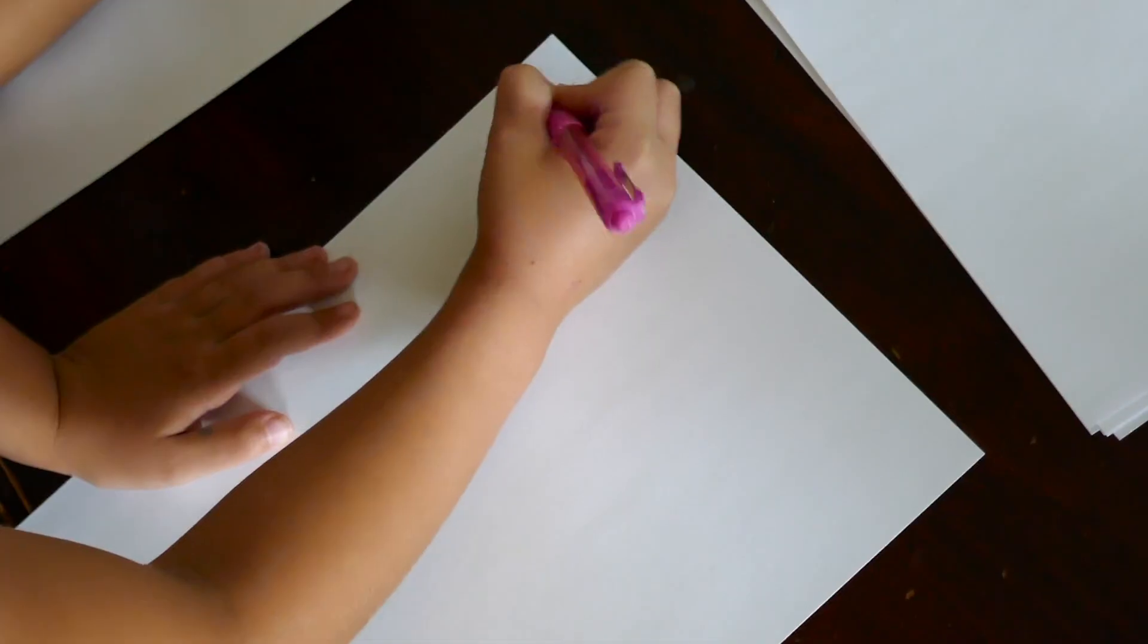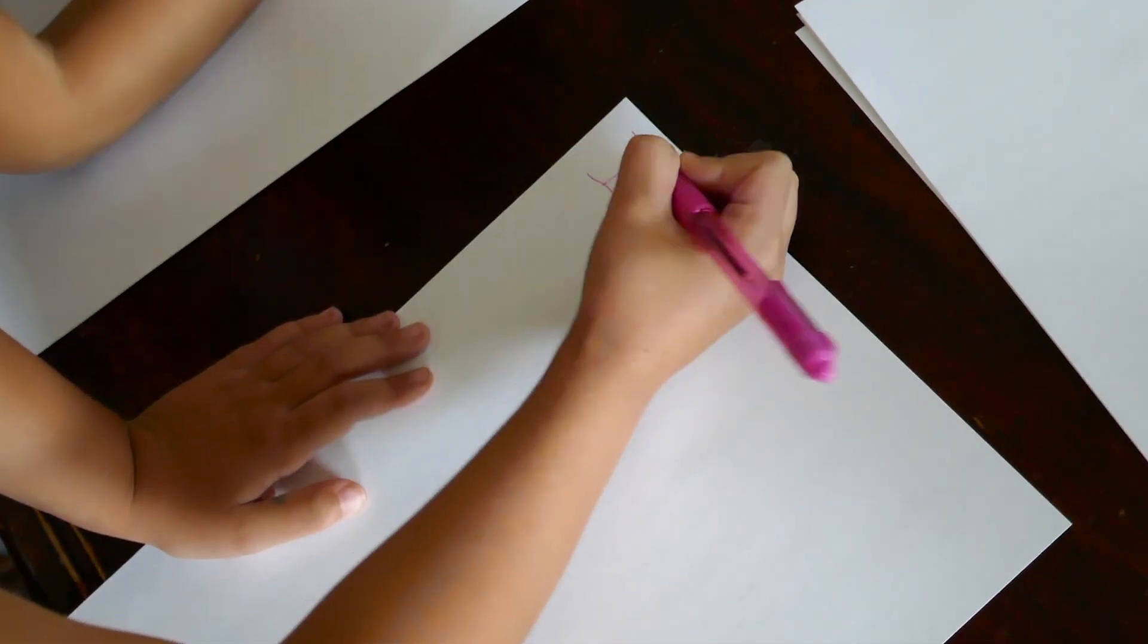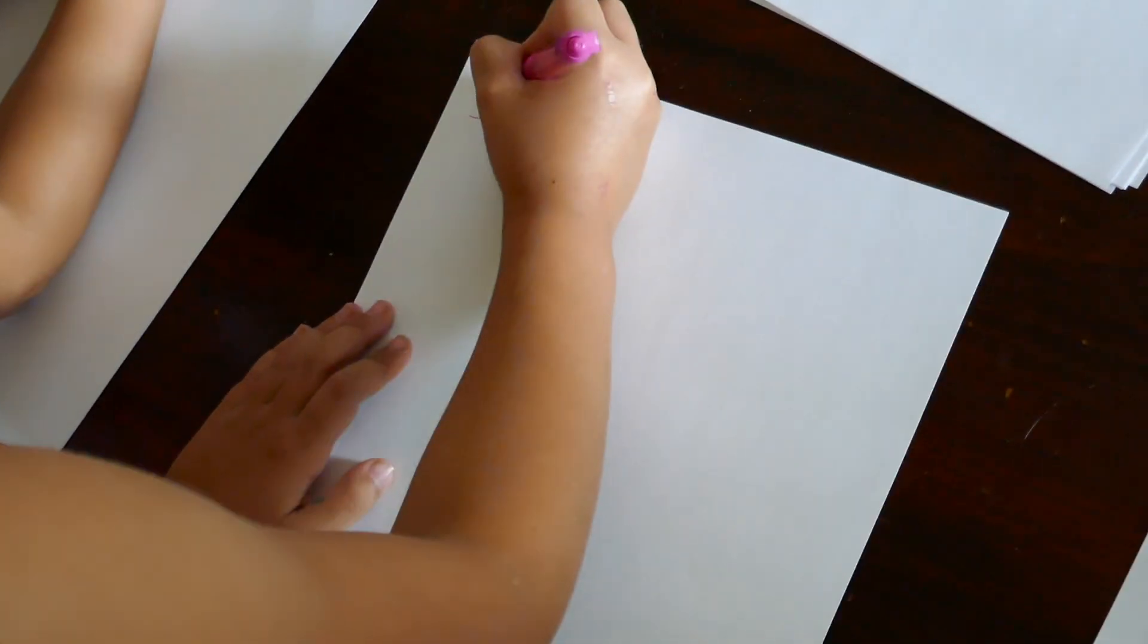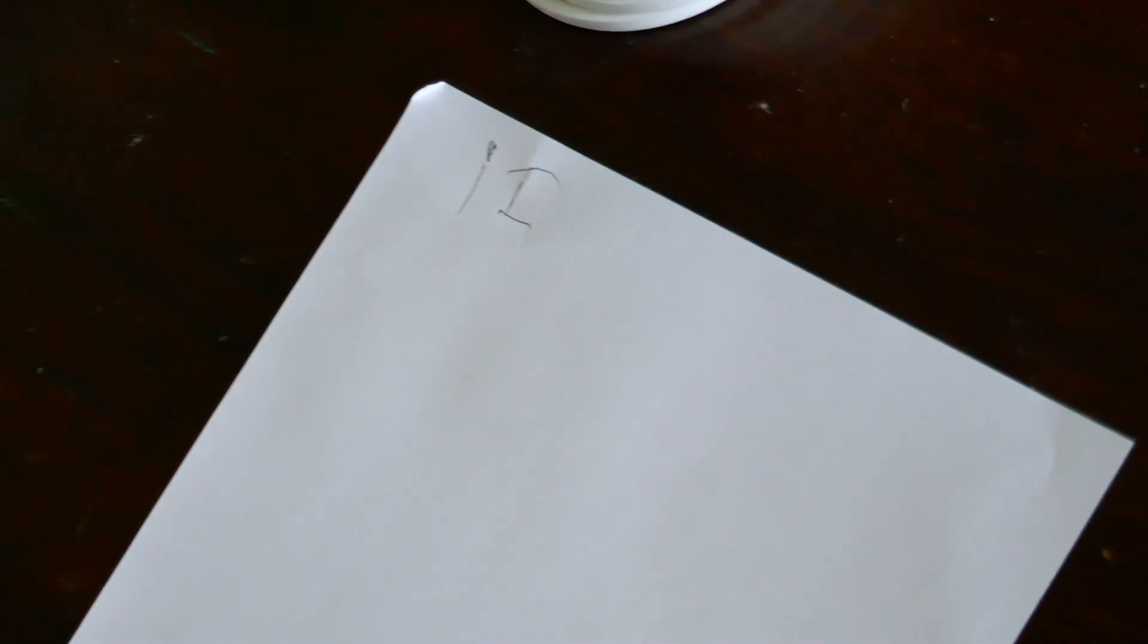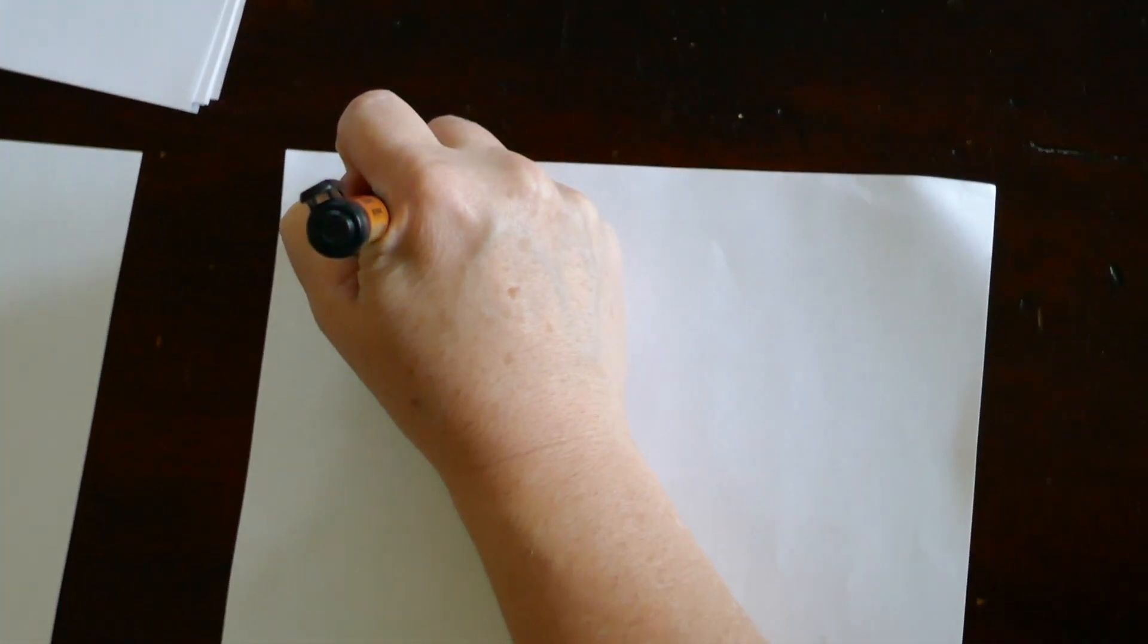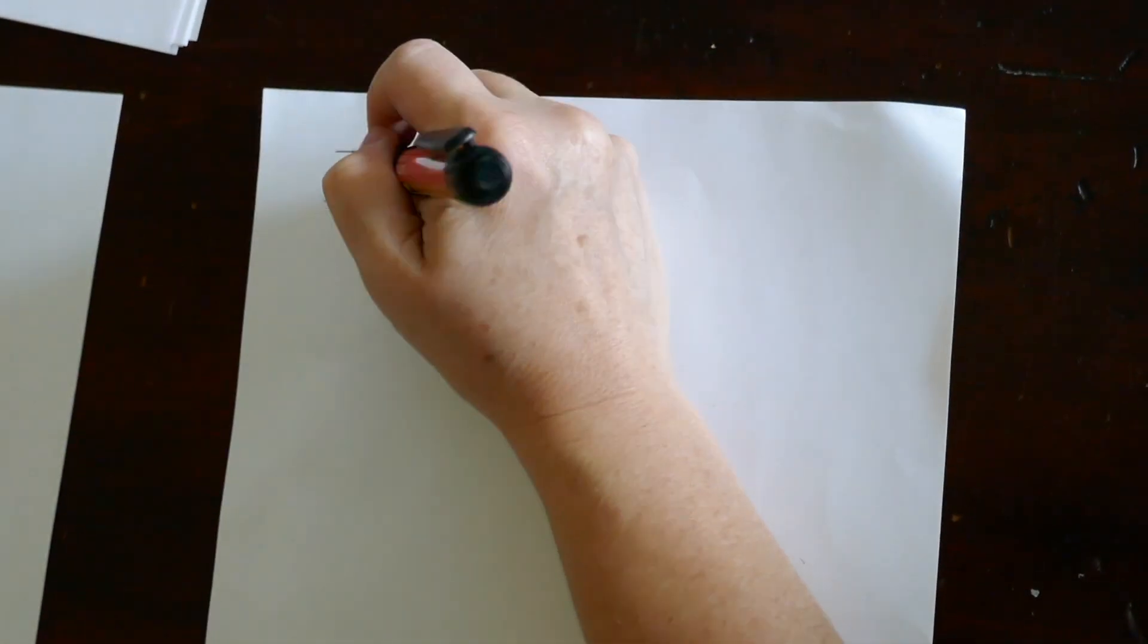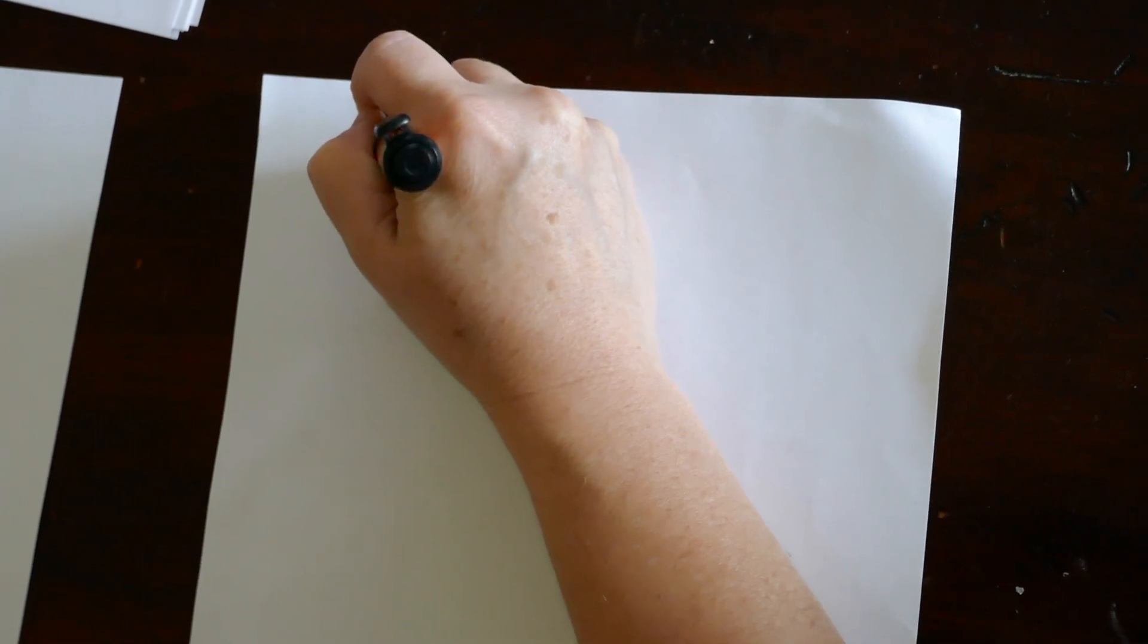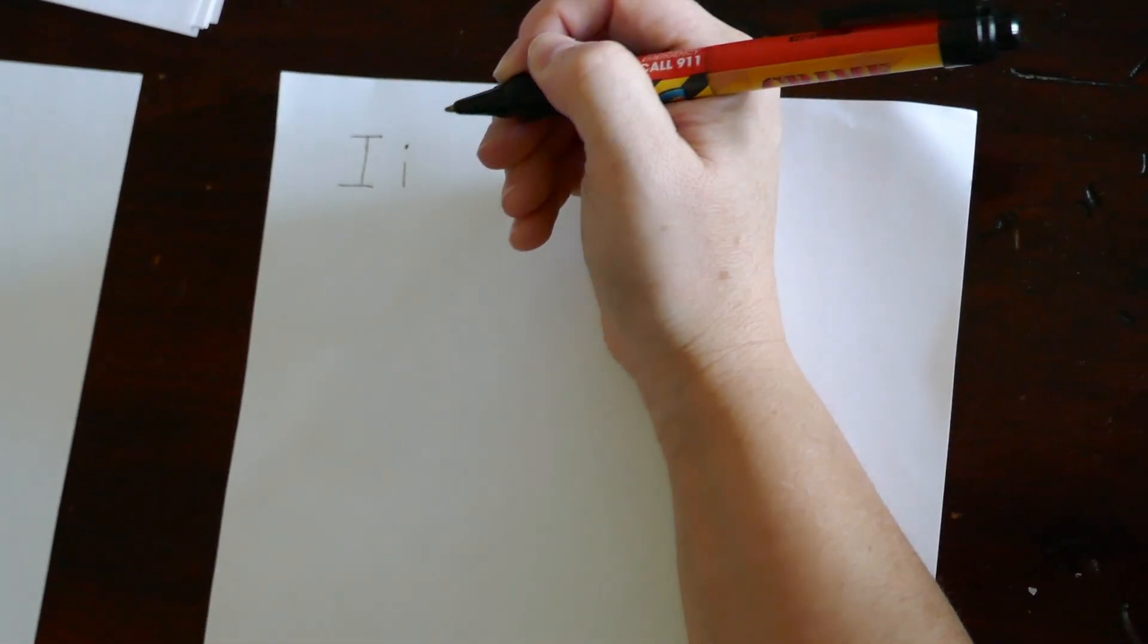Alright, write your I's. Let's tap it. E. Very good. I with two lines on the top and the bottom, and the lowercase i is one little line with a dot on top.